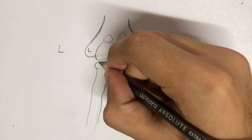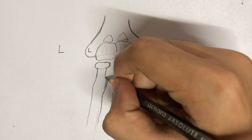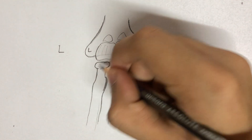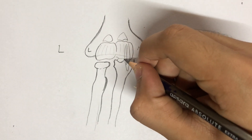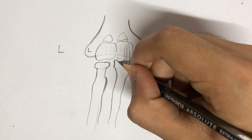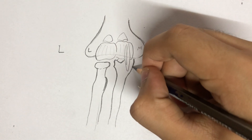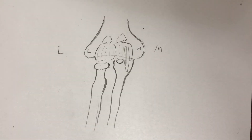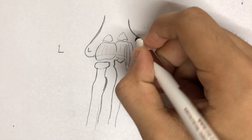At the proximal end of the radius there is the radial head, neck, and radial tuberosity. At the proximal end of the ulna there is the coronoid process anteriorly and the olecranon process posteriorly. We are here talking about the cubital fossa, which is bounded medially.